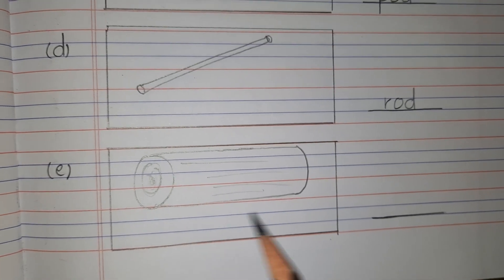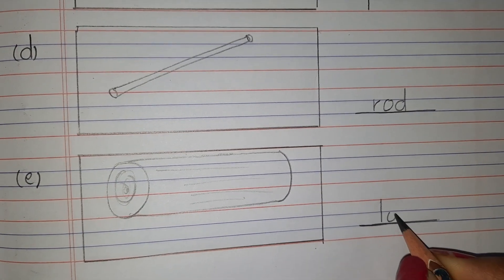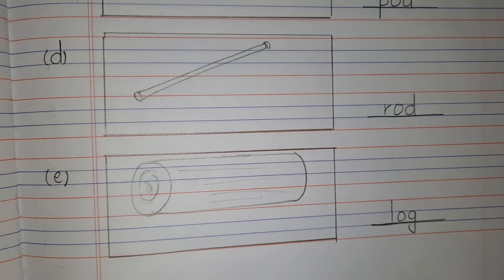Next, what is this? This is a piece of wood from the tree. This is called a log. So write down log. L, O, G, log.